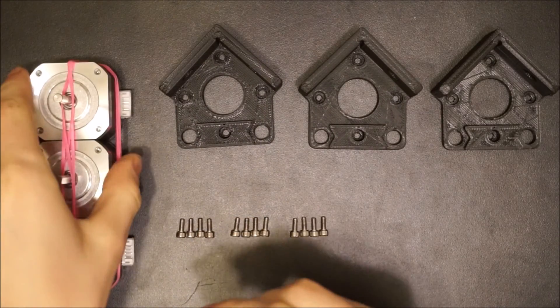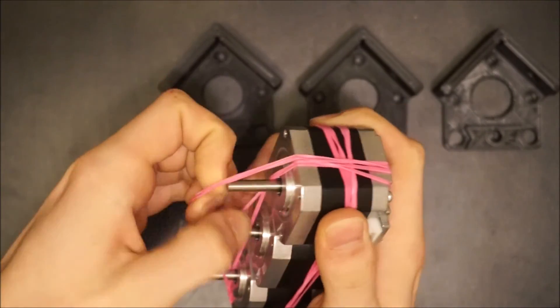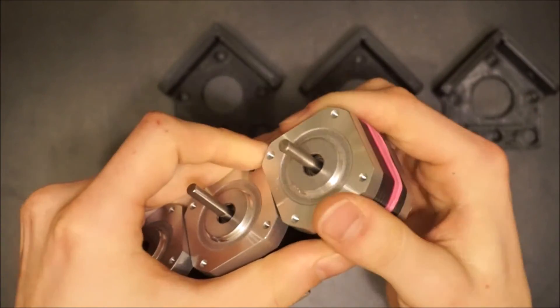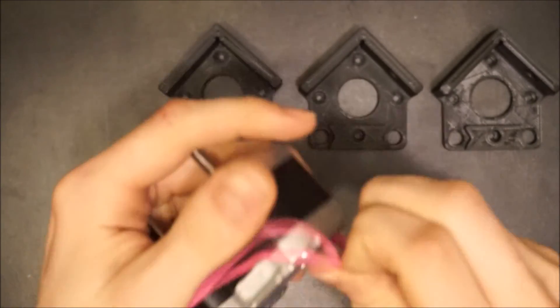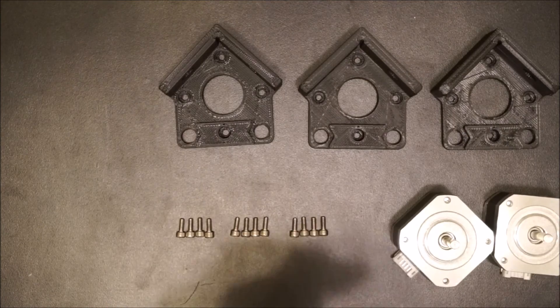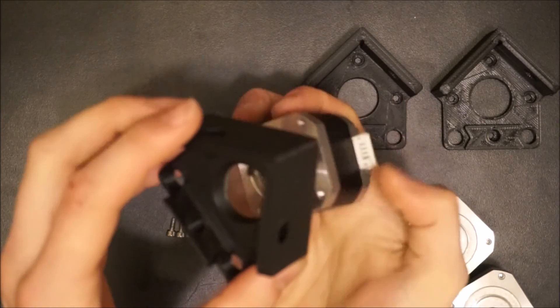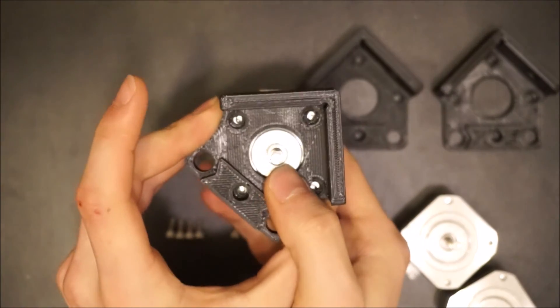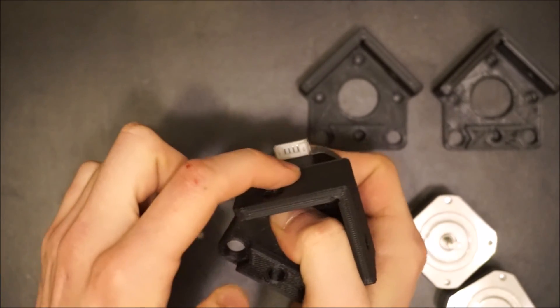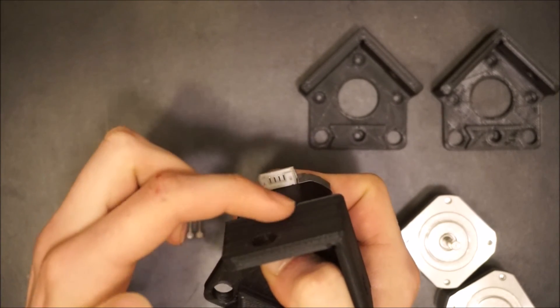Now you'll attach the three motors to three rail brackets using all of the short M3 bolts. Unpack the motors. Then grab the first motor and bracket. It's important that the connector on the motor is on the same side as the left flange of the bracket so be sure to line these up before screwing the motor into place.